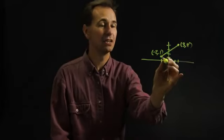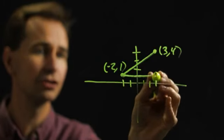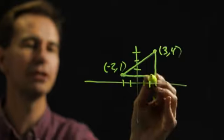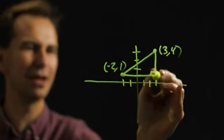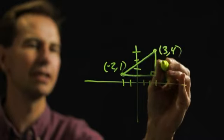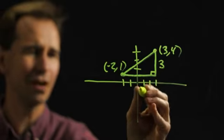So, here's how you do that. You can draw lines straight across and then straight up and make a right triangle. And then, you notice that this side of that right triangle has a length of three, and this side of that right triangle has a length of five.